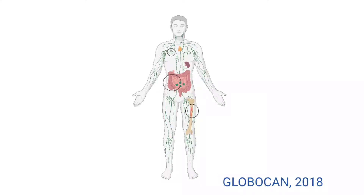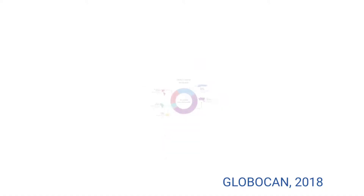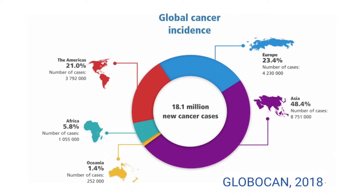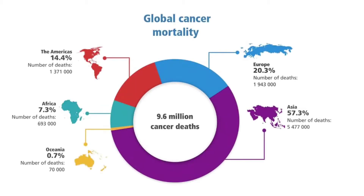A neoplasm or tumor is a group of cells that have undergone unregulated growth and will often form a mass or lump, but may be distributed diffusely. According to the Global Cancer Observatory (GLOBOCAN), 18.1 million new cancer cases were reported in 2018. According to the World Health Organization, cancer is the second leading cause of death globally, accounting for an estimated 9.6 million deaths, or one in six deaths, in 2018.